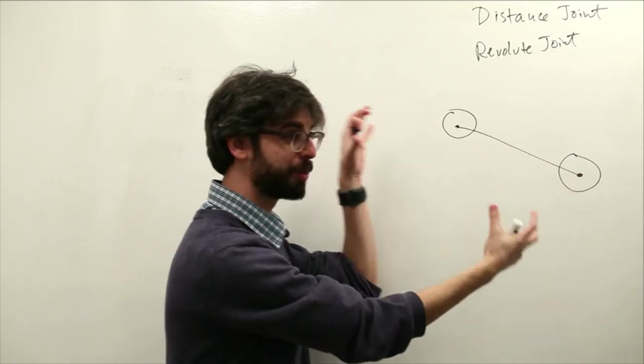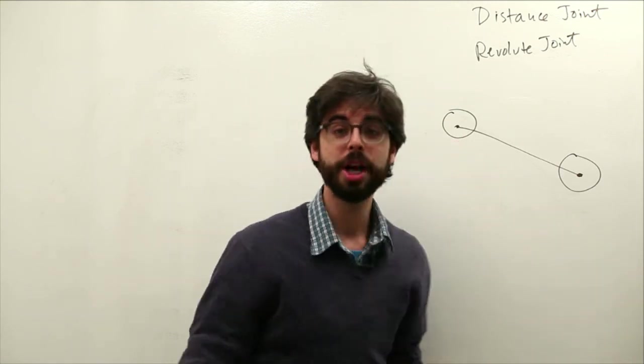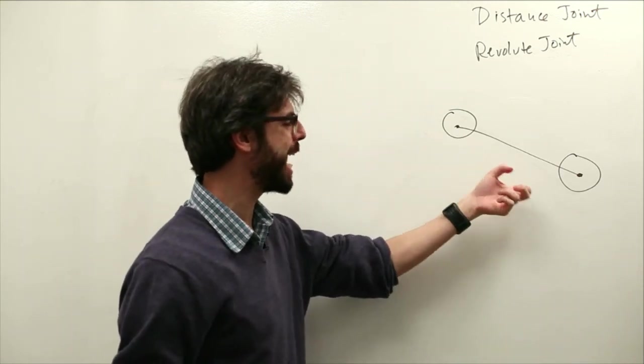These objects, this could be a springy joint, it could be a very rigid joint, it could be long, it could be short. There are lots of ways you could configure this but it is just that, a connection.